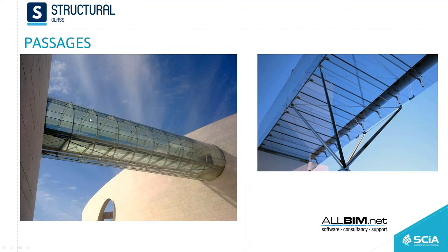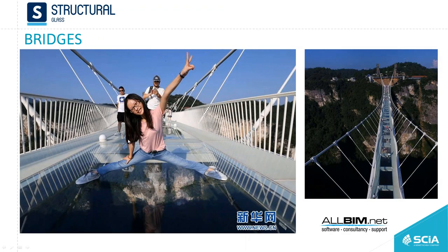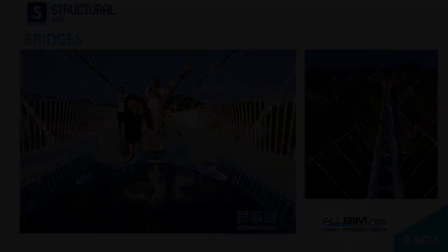We don't limit ourselves to buildings — we also have passages in different shapes in combination with steel. Very impressive is this bridge in China, which I've shown in the model. It is a steel bridge, nobody can doubt it, but people visit it just because of the glass decks that are positioned on it. Somebody has to be able to calculate it.